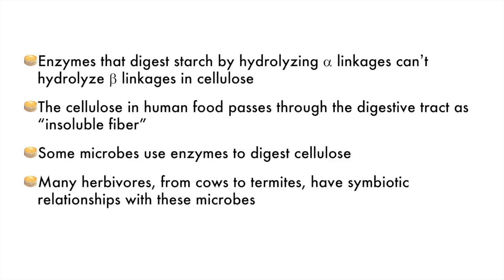So while starch is fairly easy to digest, cellulose is not. The function of starch is to be broken down into glucose fuel when needed; cellulose is made to stay put. We take advantage of this on a regular basis. Cellulose is the most abundant polysaccharide in the world, considering it makes up the structure surrounding most plant cells. Cotton is produced from cellulose fibers. Paper is produced from cellulose fibers. Wood is a mix of cellulose and another polymer called lignin.